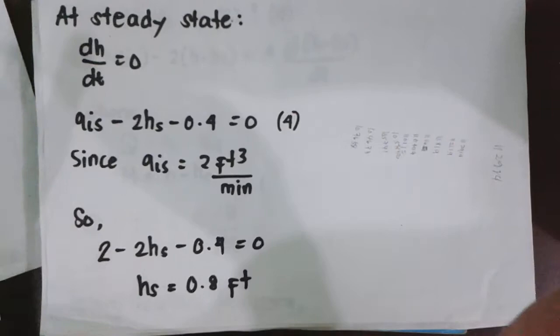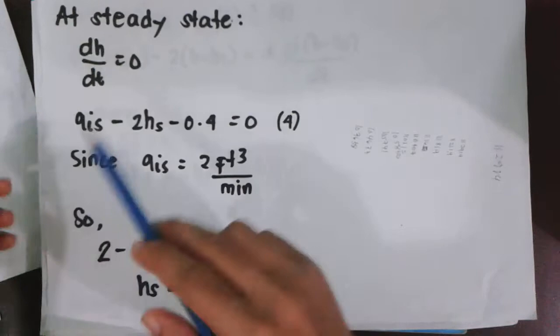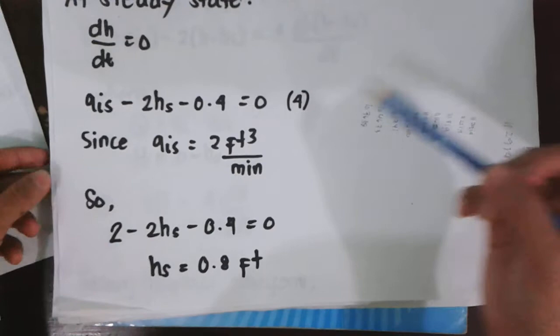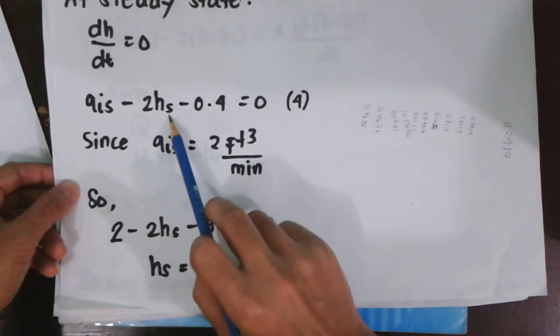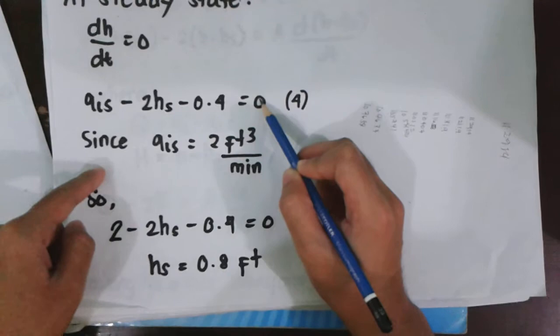At first, or initially, the process is operating at steady state. So at steady state, there's no disturbance, no accumulation. So the change in level or dH over dt is equal to 0. At steady state, we have this equation: Qi,s minus 2Hs minus 0.4 is equal to 0.